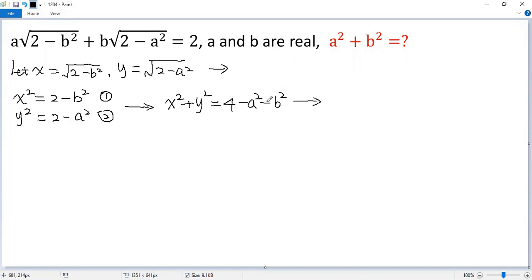Now move these two terms to the left side. So we get a squared plus x squared and then b squared plus y squared equals 4. We denote that as equation 3.